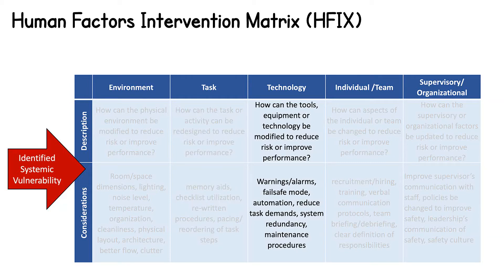Next we can focus on technological factors, which refer to the equipment, tools, software, and documents used to perform the job — essentially anything you would use to get your job done. When considering ways of modifying technological factors, ask yourself: can warnings or alarms be used to improve and increase awareness? Can automation be useful in reducing the dependency on human performance of certain tasks? Are there better tools currently on the market? And could equipment be redesigned to make the process safer?